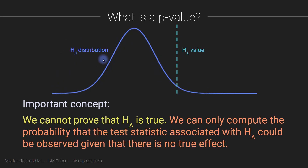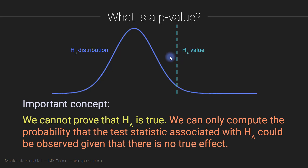Remember, the null hypothesis distribution comes from an assumption — we use a formula to derive it — while the observed value comes from data we really collect from the outside world. Now, here is an important concept: we cannot actually prove that the null hypothesis is true. That's not what we're doing with statistical models. Instead, with statistics, what we do is compute the probability that these values could have arisen under the null hypothesis.